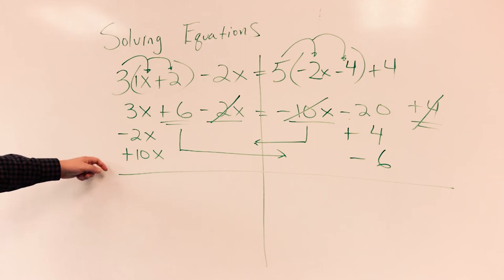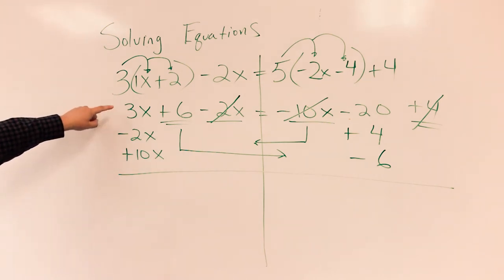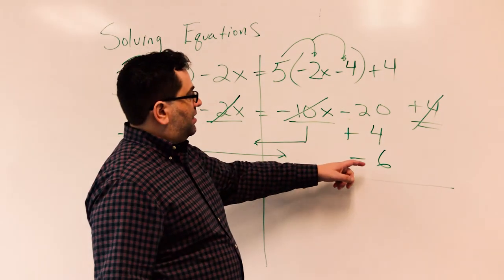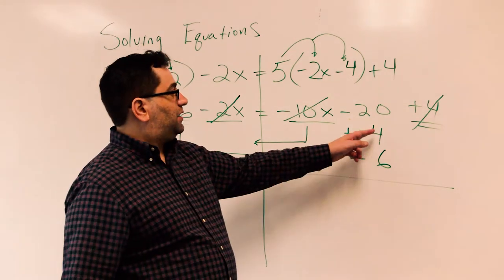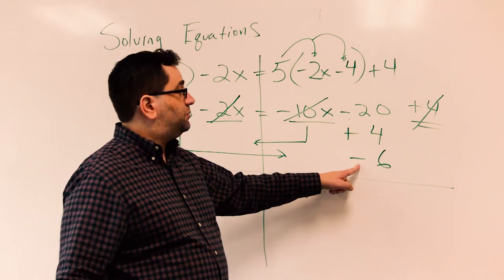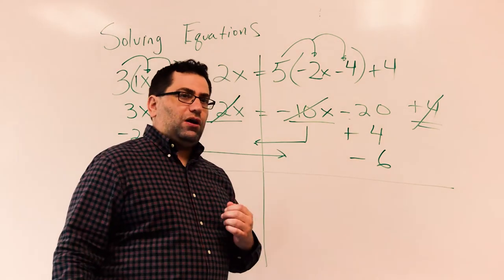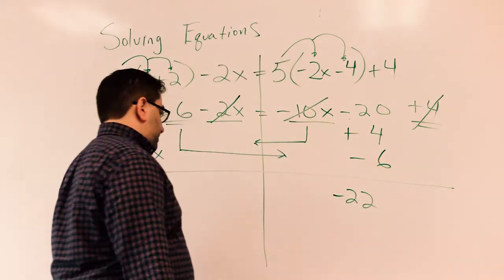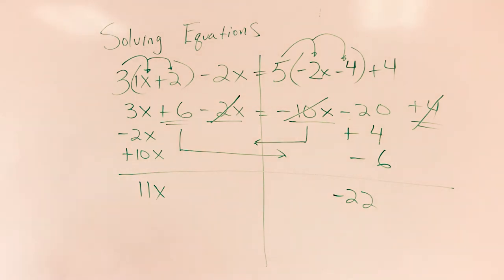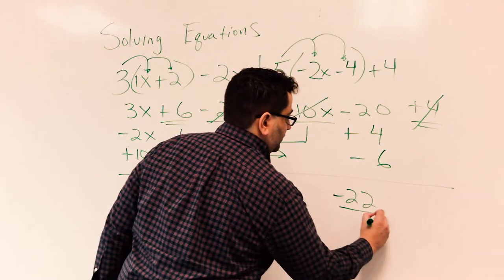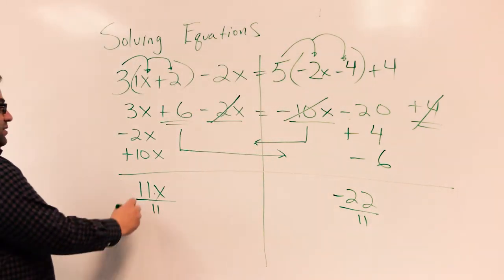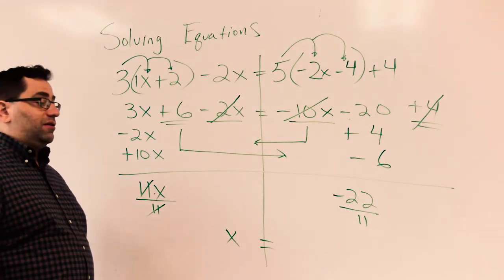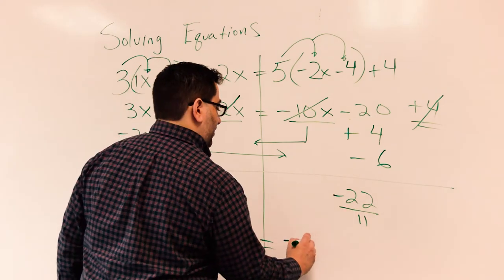So now let's take a look: 10 plus 3 is 13, 13 minus 2 is 11x. Here I have negative 6 and positive 4 — opposite signs, so we're going to subtract. 6 minus 4 is 2, negative because 6 is bigger. Negative 2 and negative 20 — same sign, so we're going to add. 20 plus 2 is 22, and the sign is going to be negative. My last step: I'm going to reverse 11 times x with division on both sides. 11 divided by 11 is 1, and negative 22 divided by 11 is negative 2. Negative divided by positive is negative, and 22 divided by 11 is 2.